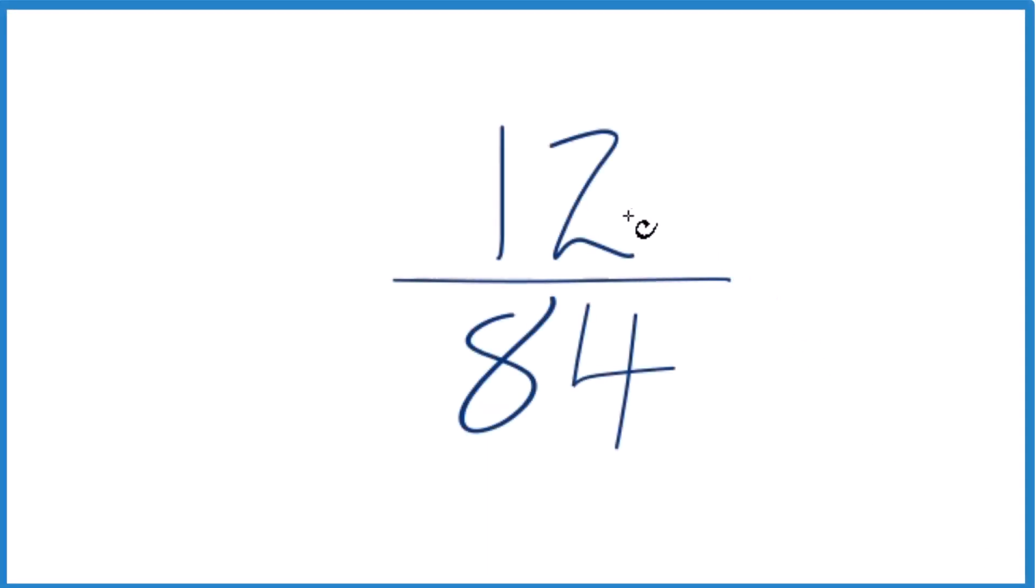If you need to simplify the fraction 12/84, here's how you do it. We're trying to find another fraction that's equivalent to 12 divided by 84. It has the same decimal value, just it's in lowest terms.